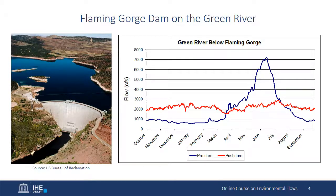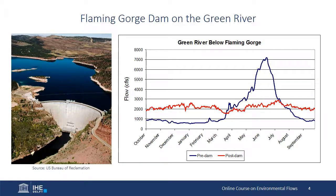Dams need not erase rivers to cause severe impacts on aquatic ecosystems. Large alterations in the annual and interannual variability of the river flow regime can also have severe detrimental effects. This is the Flaming Gorge Dam and Reservoir on the Green River, a headwater tributary of the Colorado River in North America. The stored water is used for hydropower generation, irrigation, and recreation. The blue line in the plot shows the river's flow regime before construction — gentle low flows in winter and high variable flows from April to August. After the dam, the flow regime became more uniform, doubling wintertime flows and effectively erasing the summer high flows, negatively impacting habitats of native species and other aspects of the downstream river ecosystem.